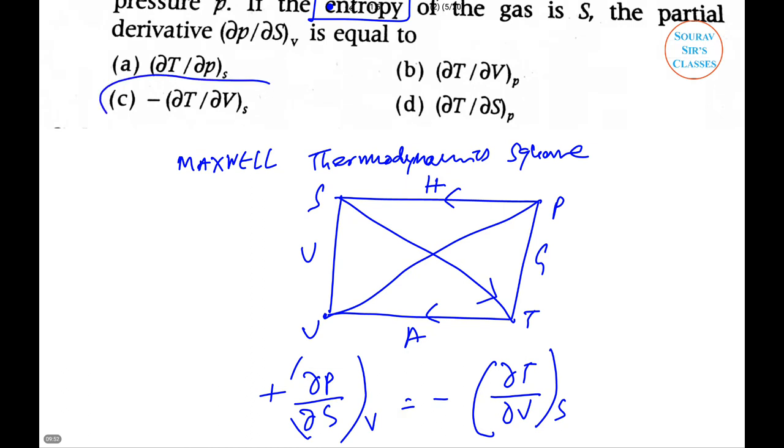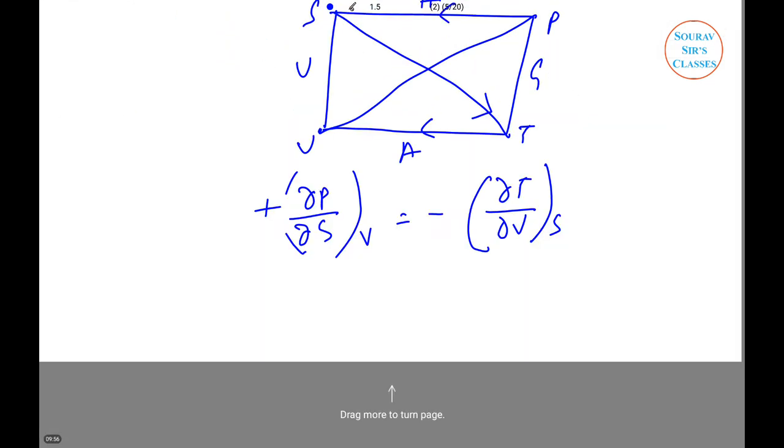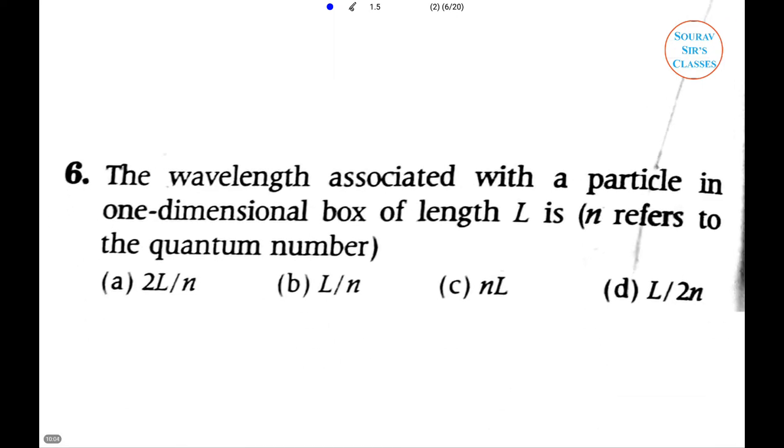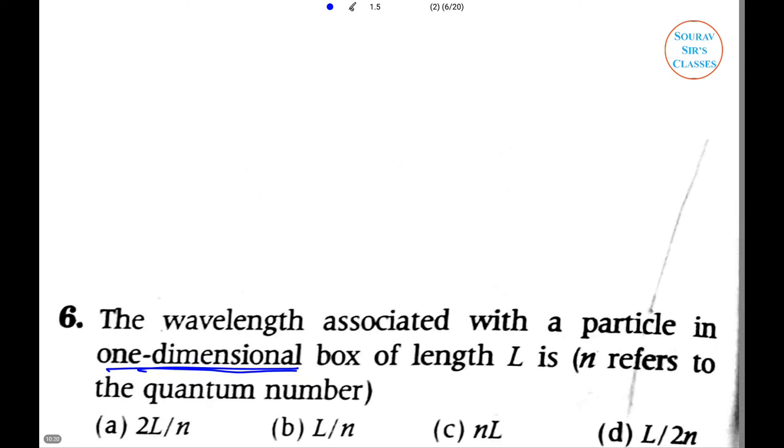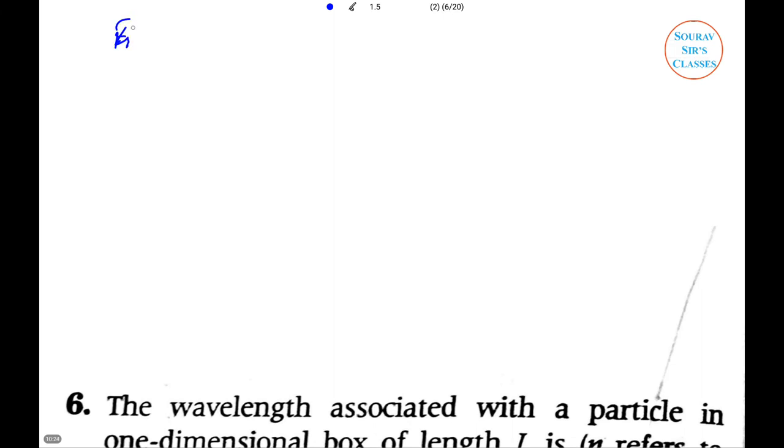The wavelength associated with a particle in a one-dimensional box of length L is what, where n refers to the quantum number? The energy in a one-dimensional box is E equals n²h²/(8mL²), which also equals h²/(2mλ²), and equals p²/(2m).